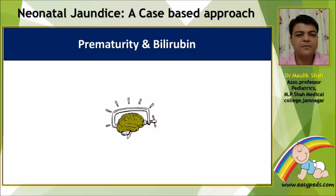Prematurity, or the lower the gestation, the more the effect of bilirubin toxicity and the more the likelihood of a poor neurodevelopmental outcome.